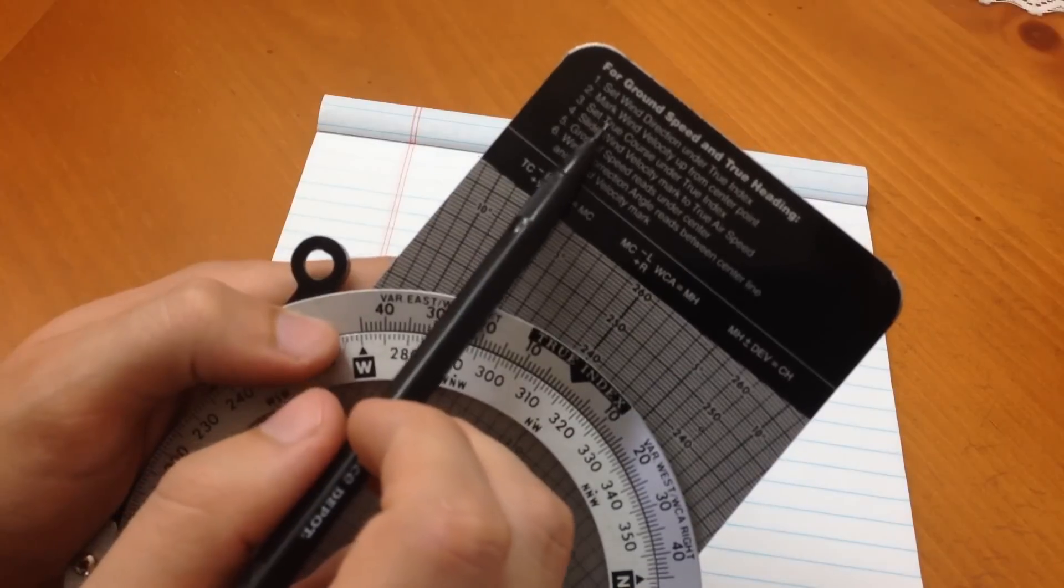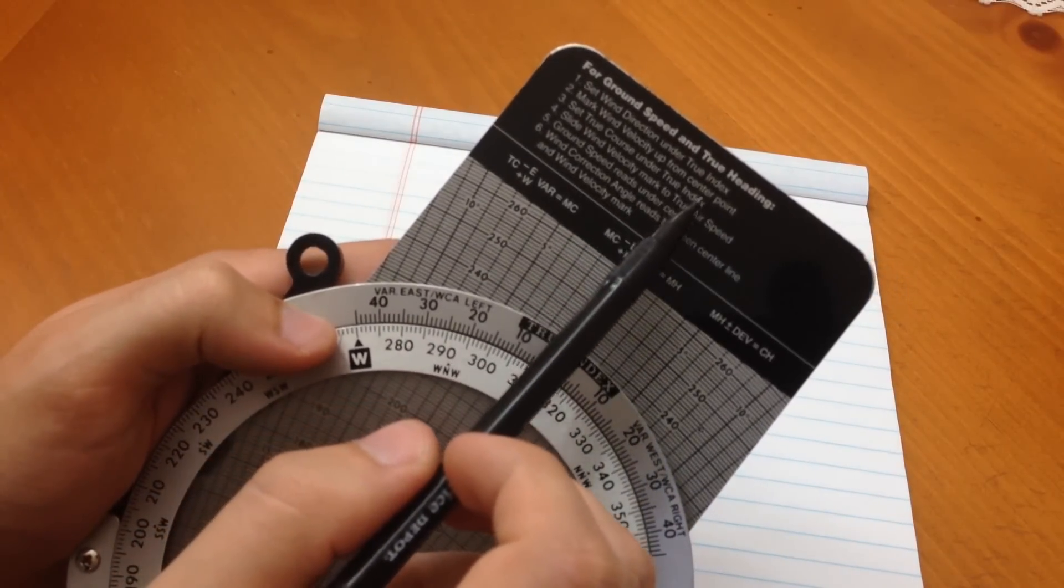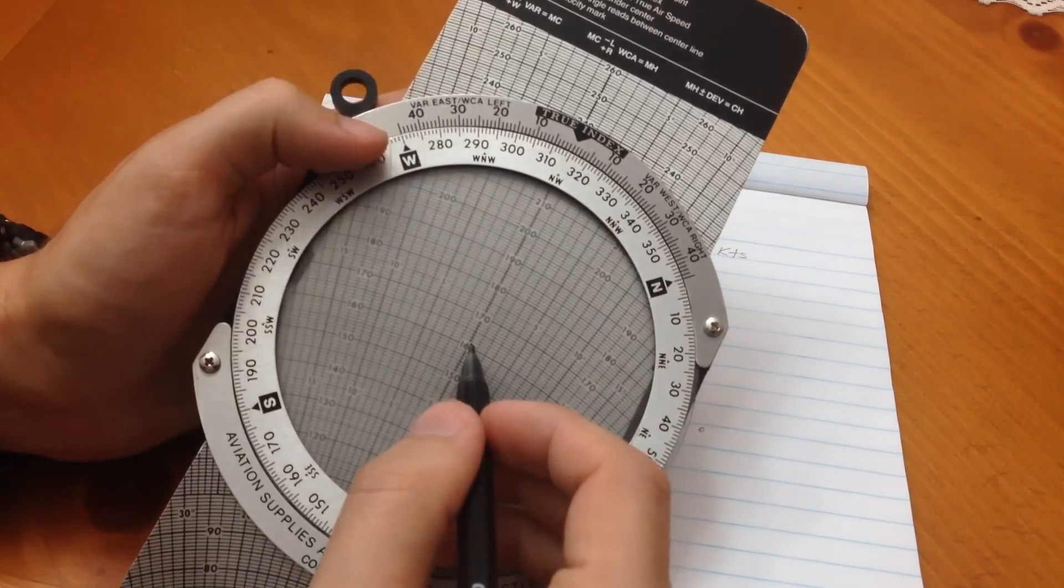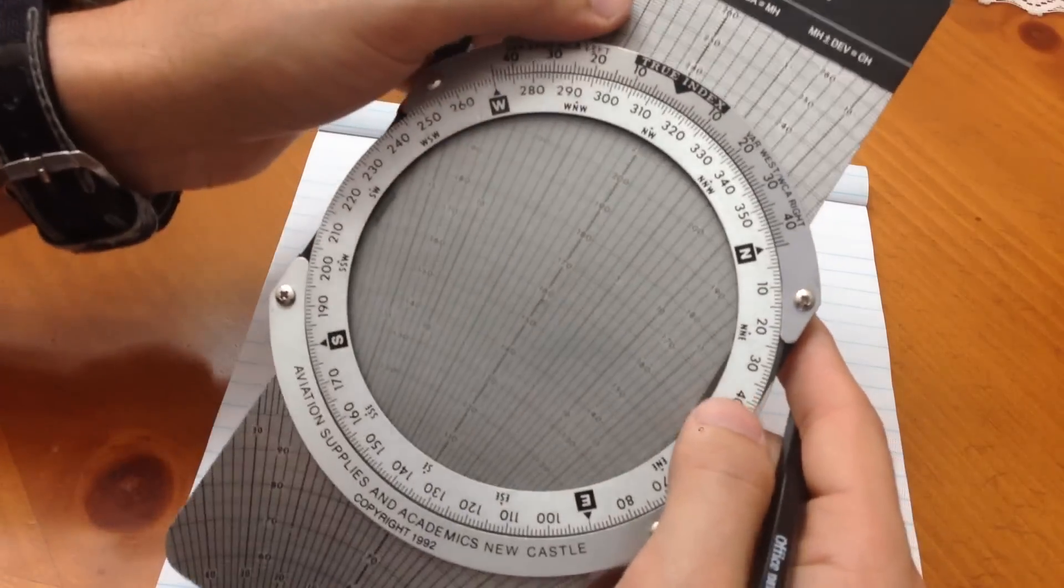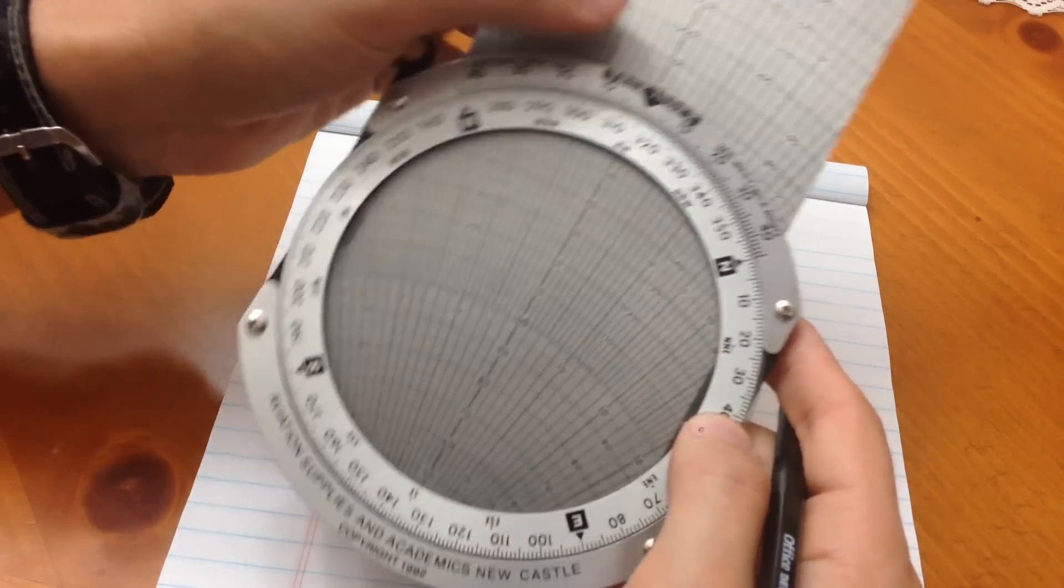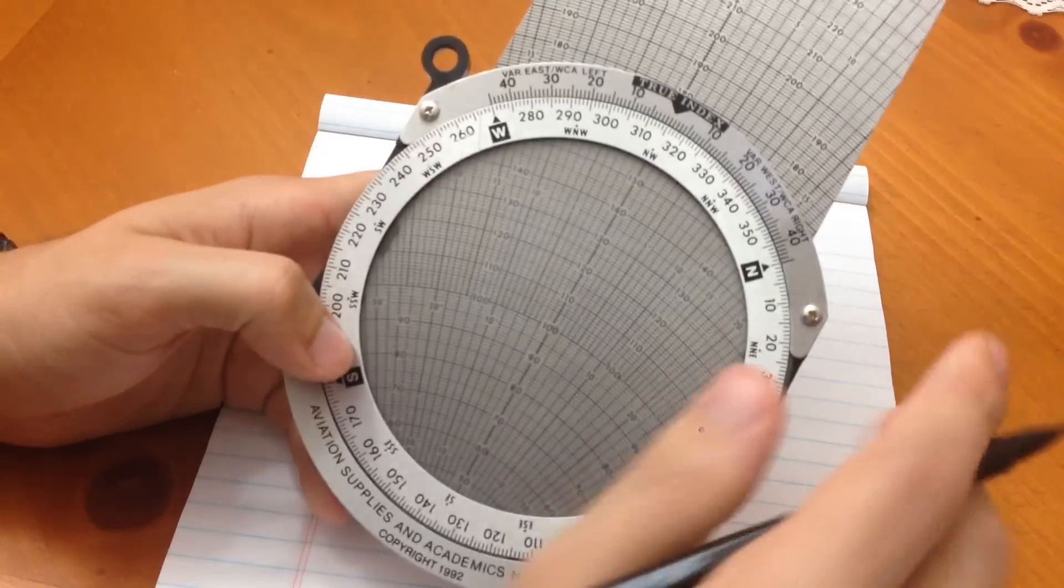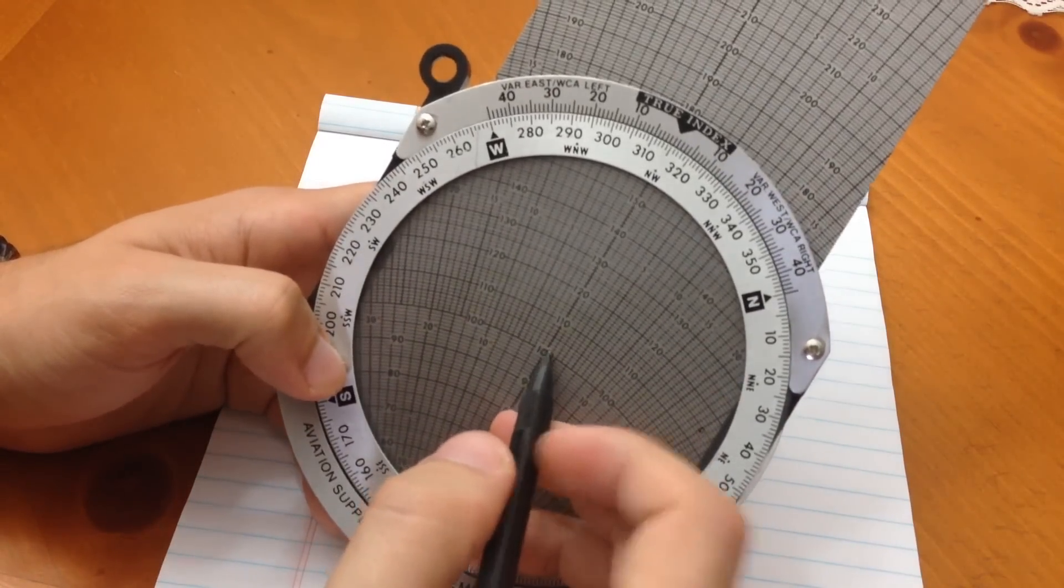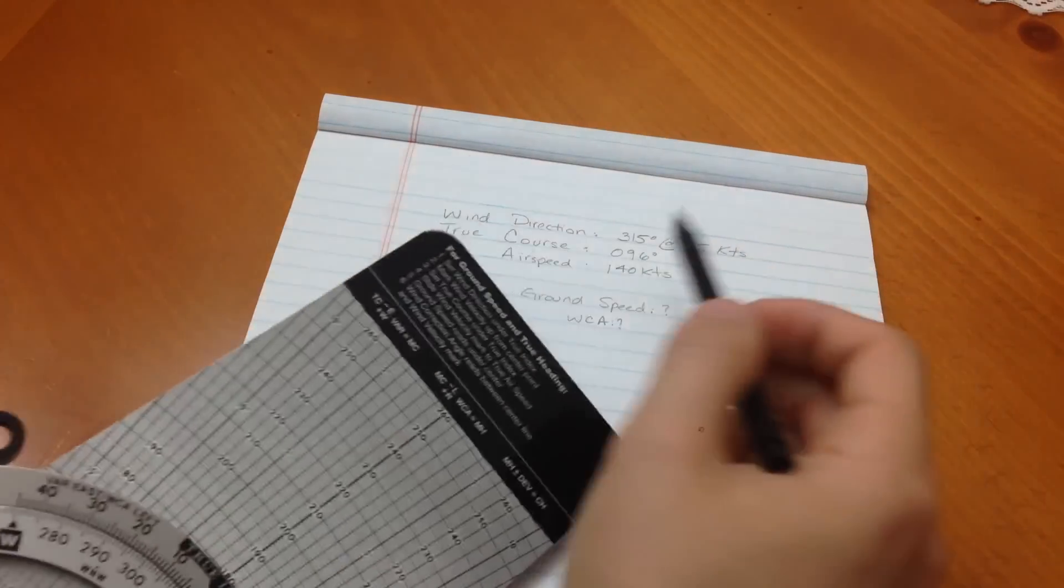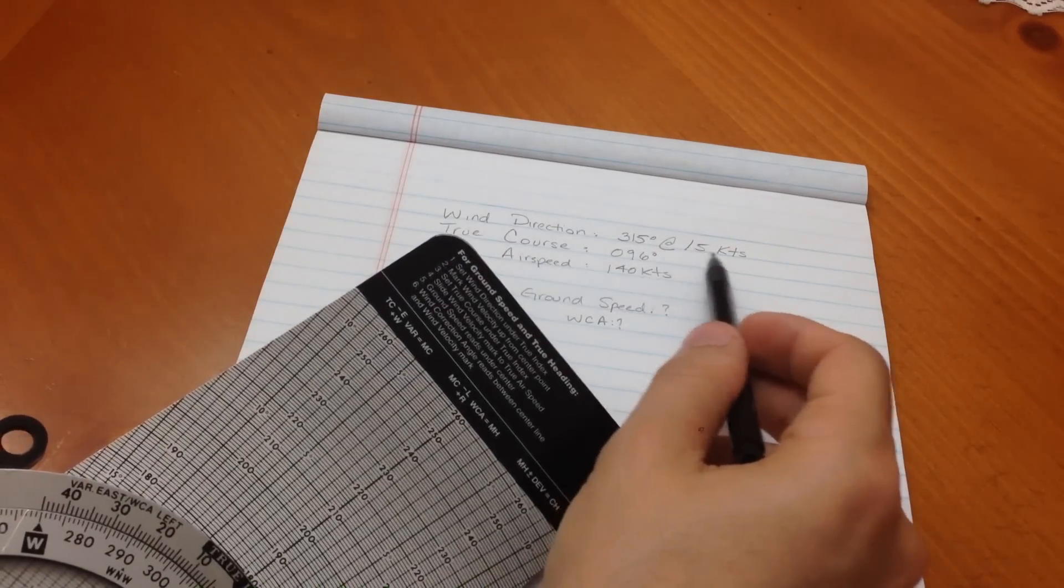Step two is mark wind velocity up from center point. Center point is this little thing right here, the little hole. And people get confused in this section, but it's very simple. I use 100 as a reference. So, I put the 100 in the center hole, and then from there, I go and mark my wind speed, which is 15 knots.